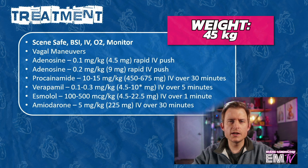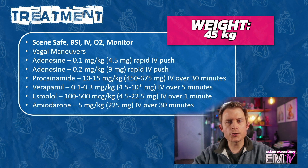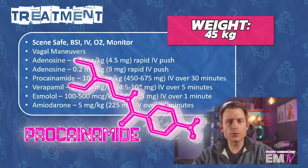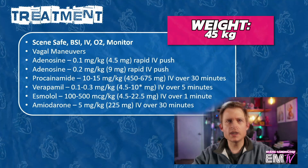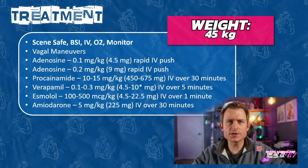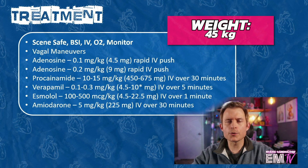Generally speaking, in most cases of pediatric SVT, two doses of adenosine will convert the rhythm. However, if the rhythm persists, you have other alternatives available to you. Vercalamide is widely seen as a great secondary medication for pediatric SVT, and it is dosed at 10 to 15 mg per kg, or in this patient's case, 450 to 675 mg given IV over 30 minutes.